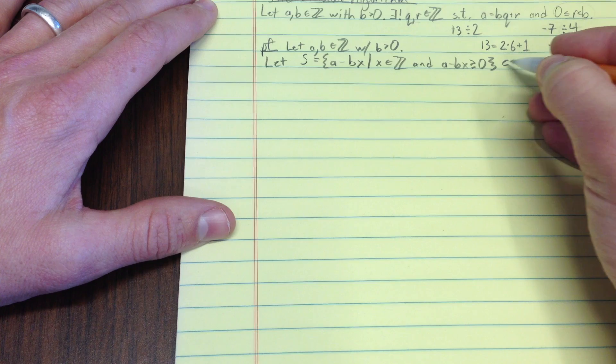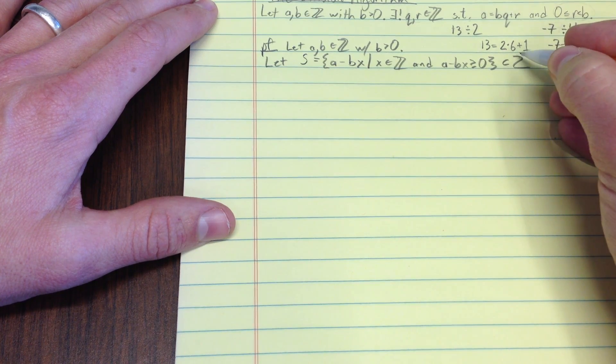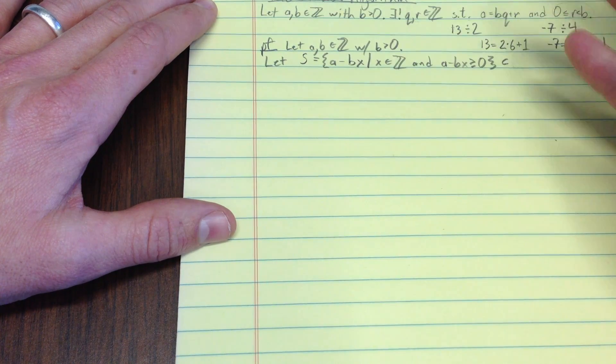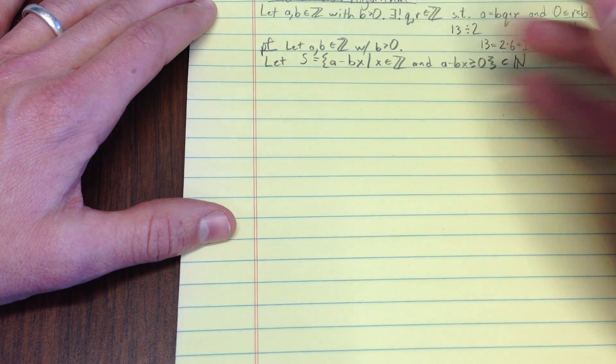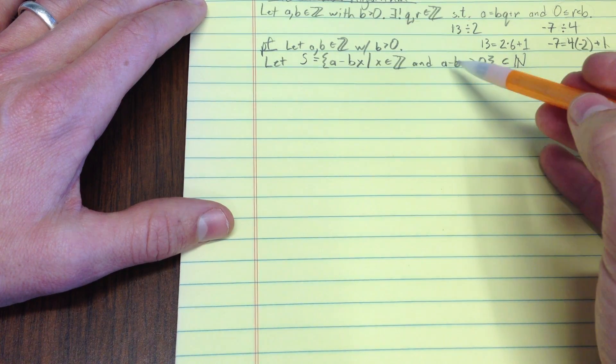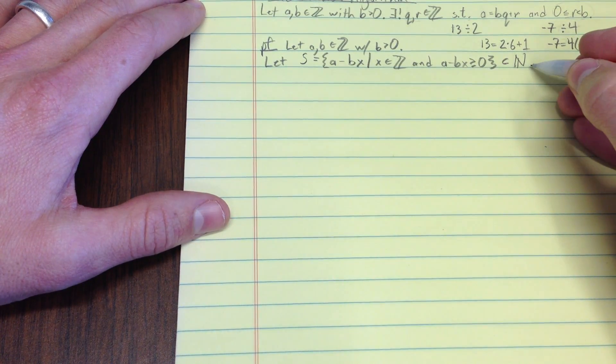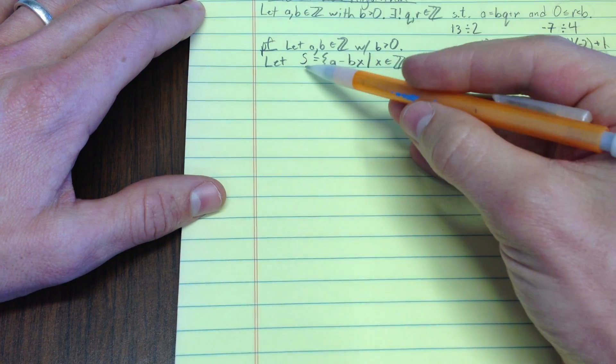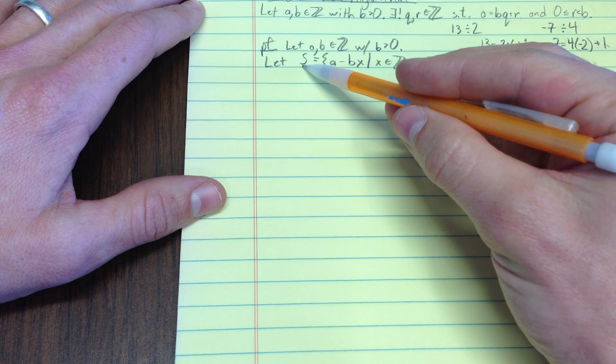So, notice that this is a subset of not just the integers, but the non-negative integers, so the natural numbers. So, now this has real potential. This has r in it, assuming such an r exists. But I can't use the well-ordering axiom until I prove that s is non-empty.